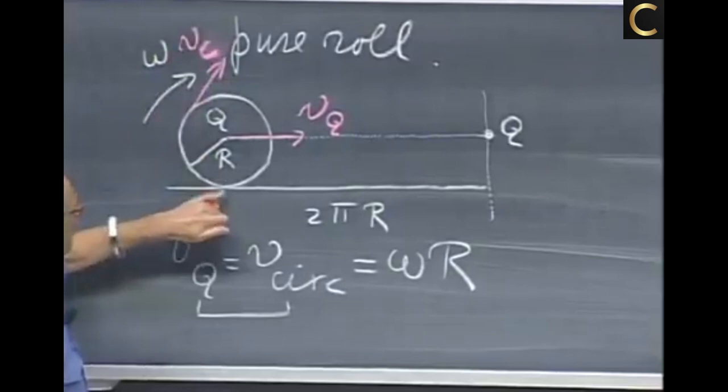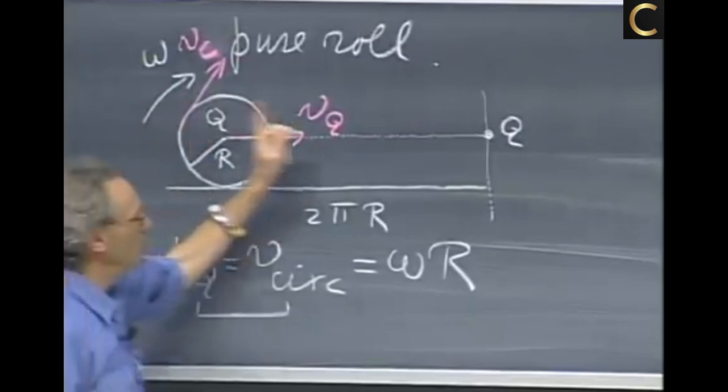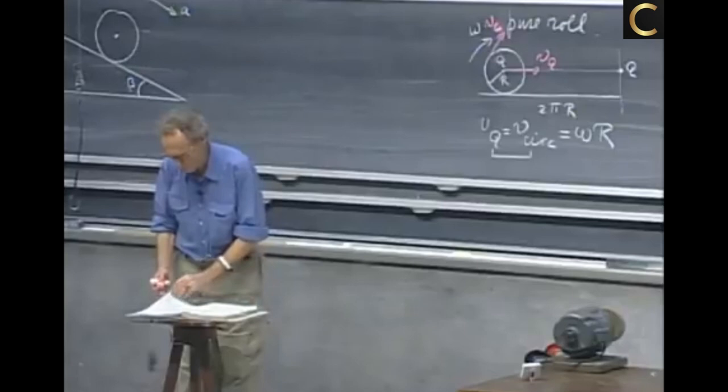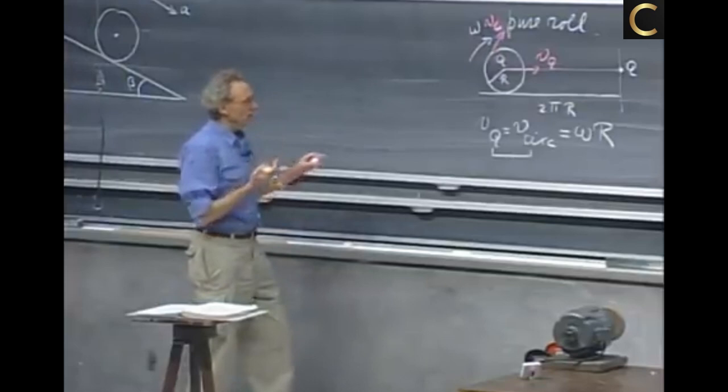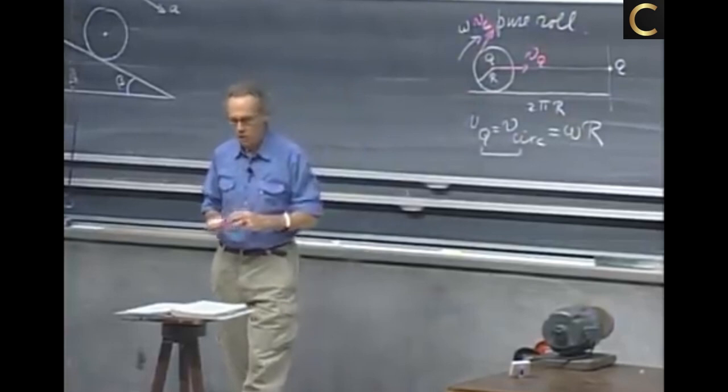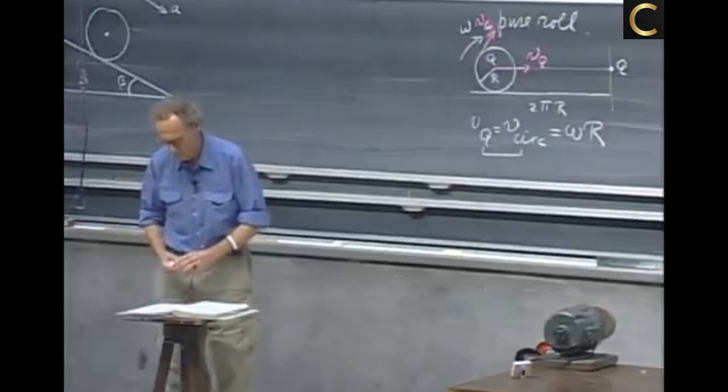You can easily imagine that if there is no friction here, that the object could be standing still, rotating like crazy, but Q would not go anywhere. So then we have skidding and we have slipping, and then we don't have the pure roll situation. If the object is skidding or slipping, then the friction must always be maximum here. If the object is in pure roll, the friction could be substantially less than the maximum friction possible.